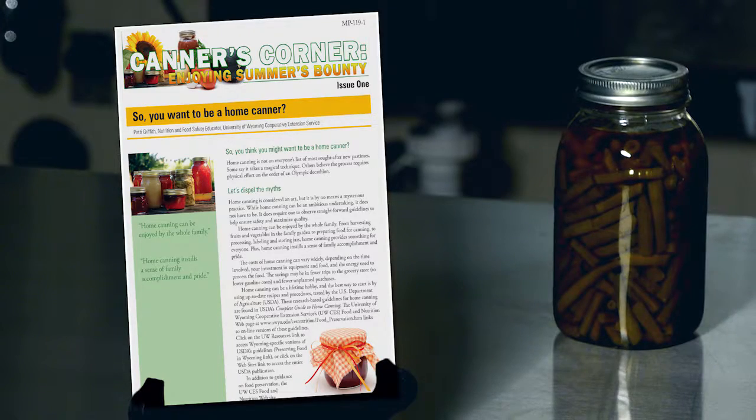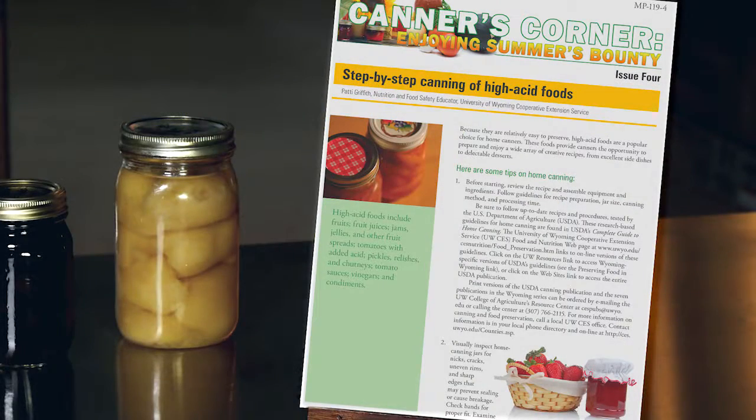Your local extension office is a great place to get your canner checked and tested. While you're there you can pick up our canners corner bulletins to help get you started. So have fun trying pressure canning with this season's harvest.